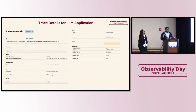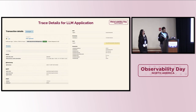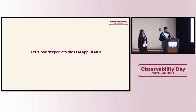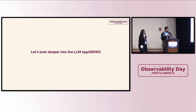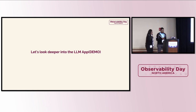For example, we have a route slash generate, and for this we have a transaction with the address ID captured. It would be easier to jump right into a demo and have more details on it. Let's move inside the demo — over to Seema.